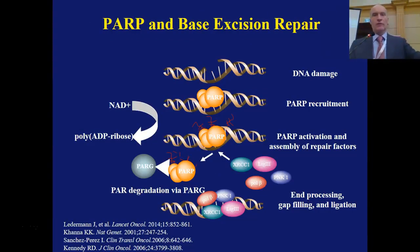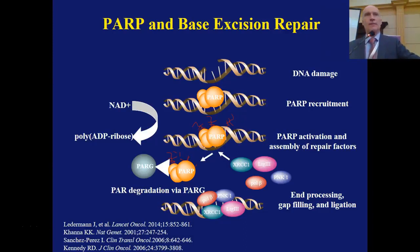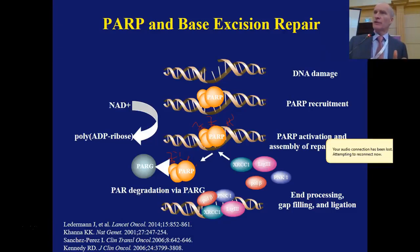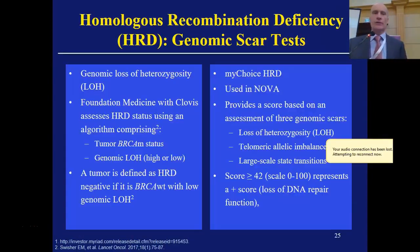Again, if you have single-strand DNA breaks, they lead to double-strand DNA breaks. If you're able to fix those double-strand DNA breaks, life goes on as normal. If you are unable to fix these double-strand DNA breaks, it results in cellular apoptosis — which we try to do in cancer cells preferentially over normal cells, which is key.